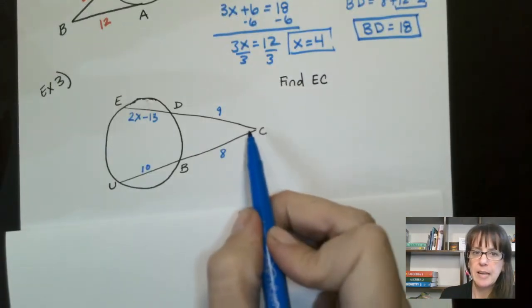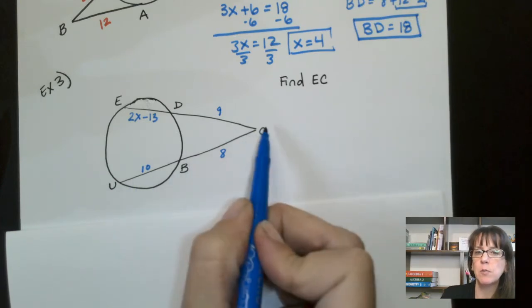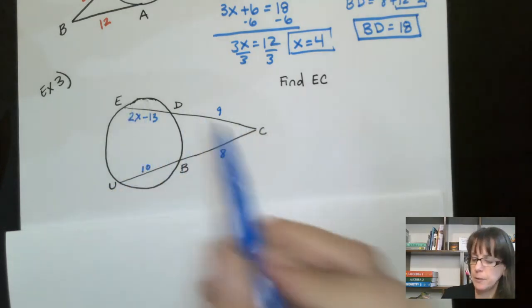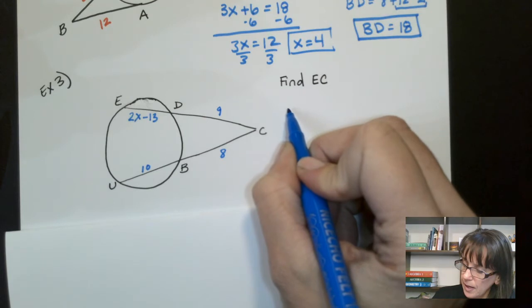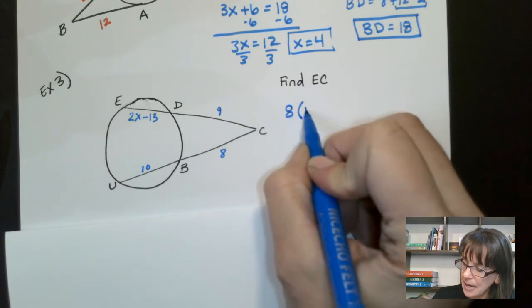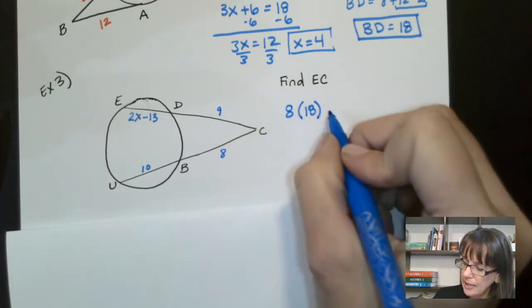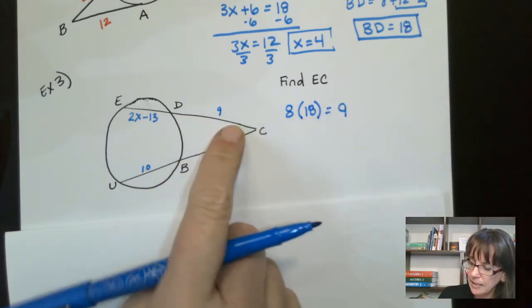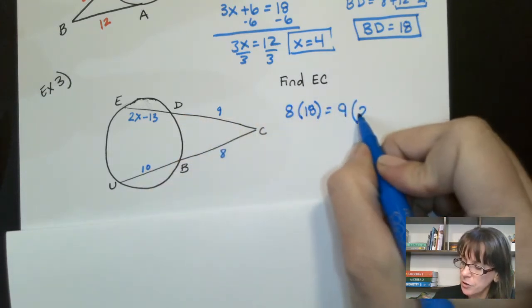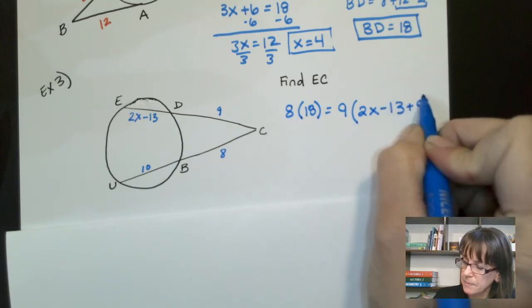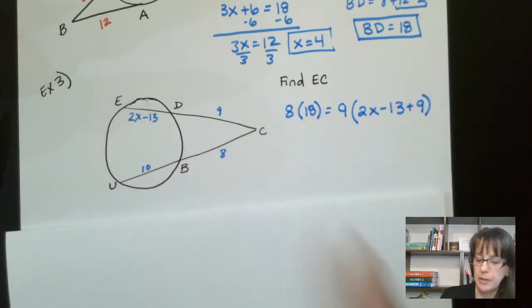Okay. Now looking at this one, remember we say outside times the total equals outside times the total. So we have 8 times 18 because outside here times the total equals the outside, which is 9 times the total, which is 2X minus 13 plus 9. That's the total for this whole thing.